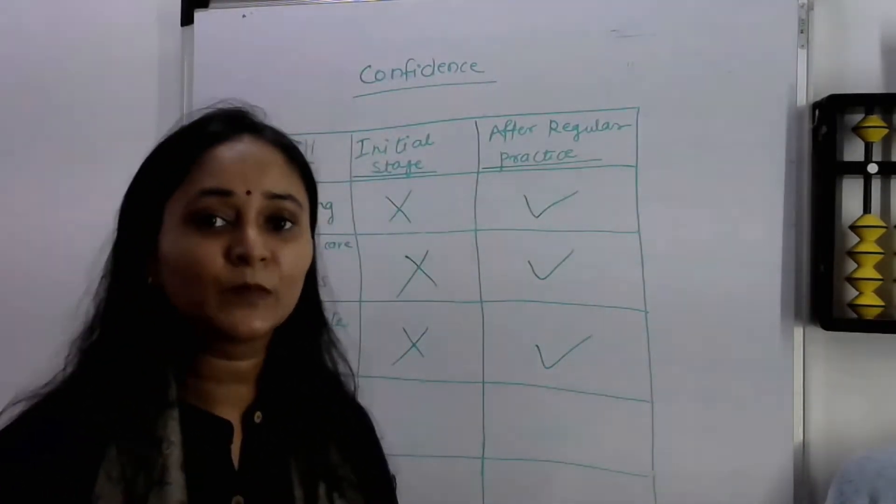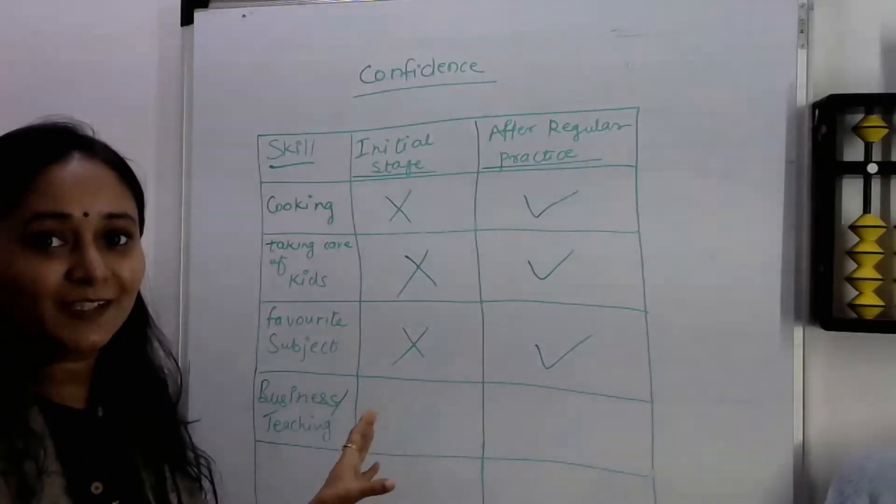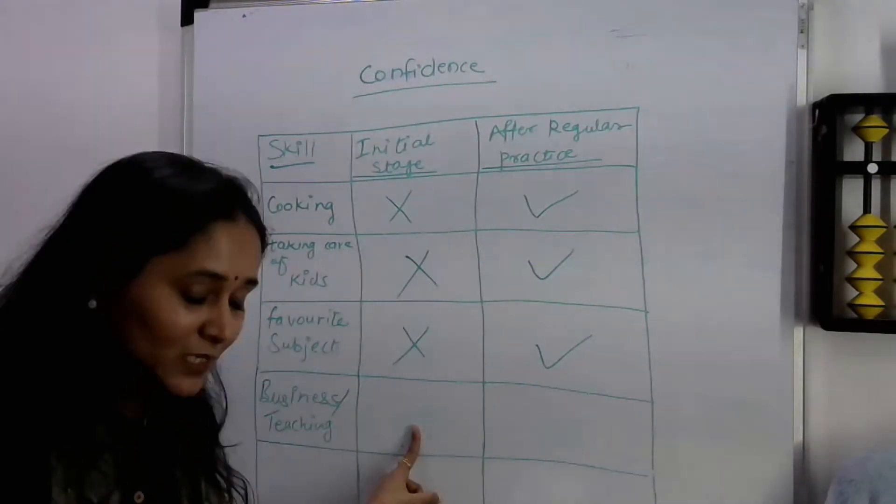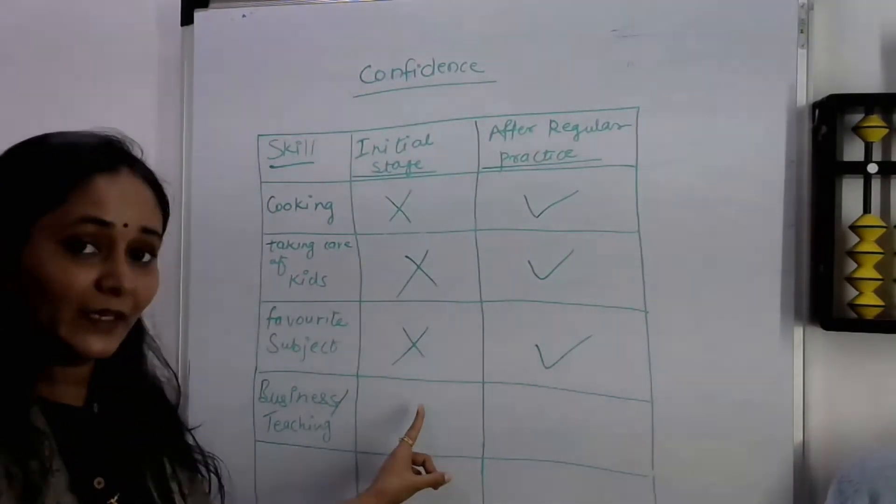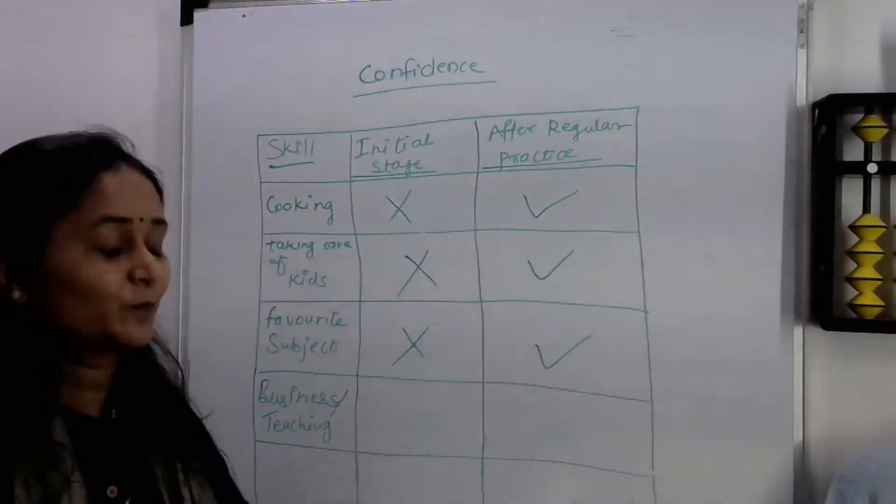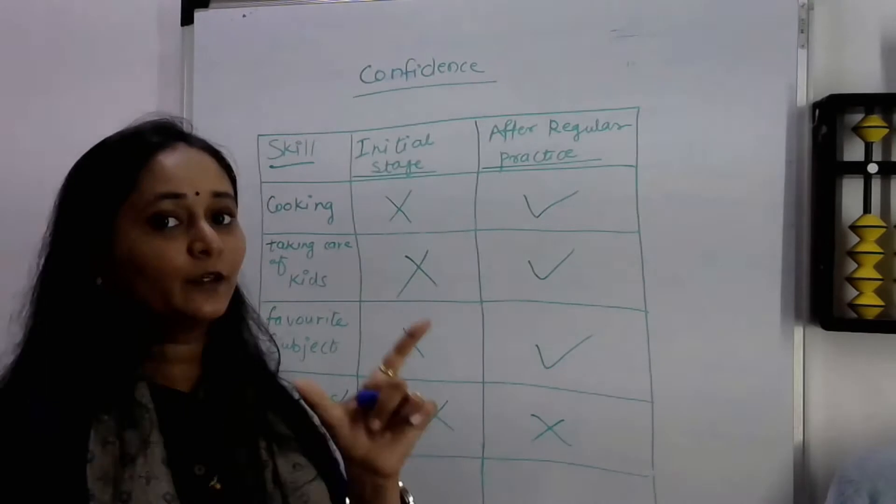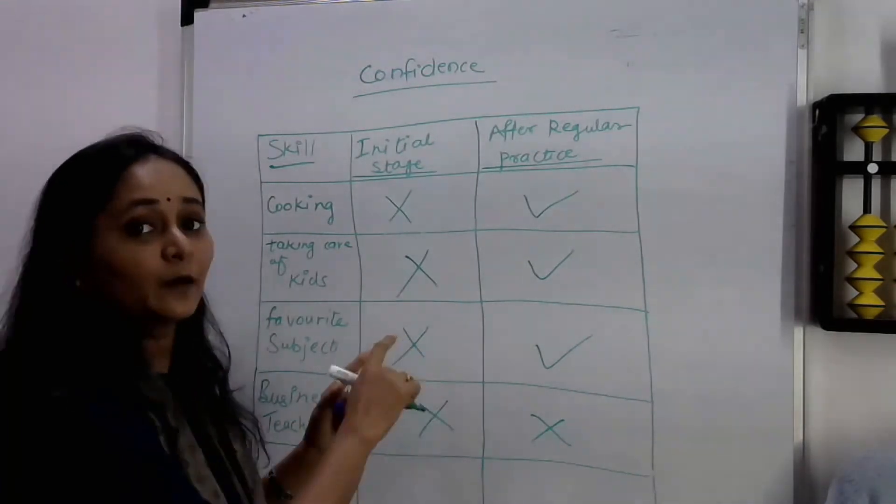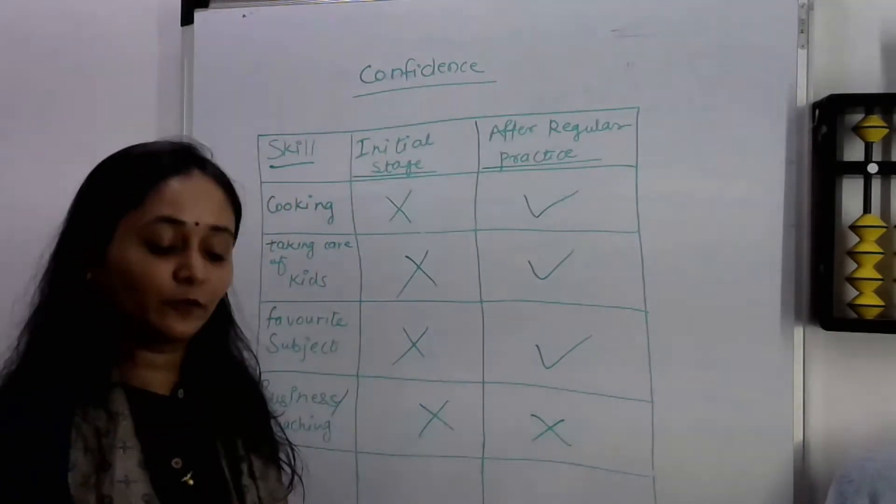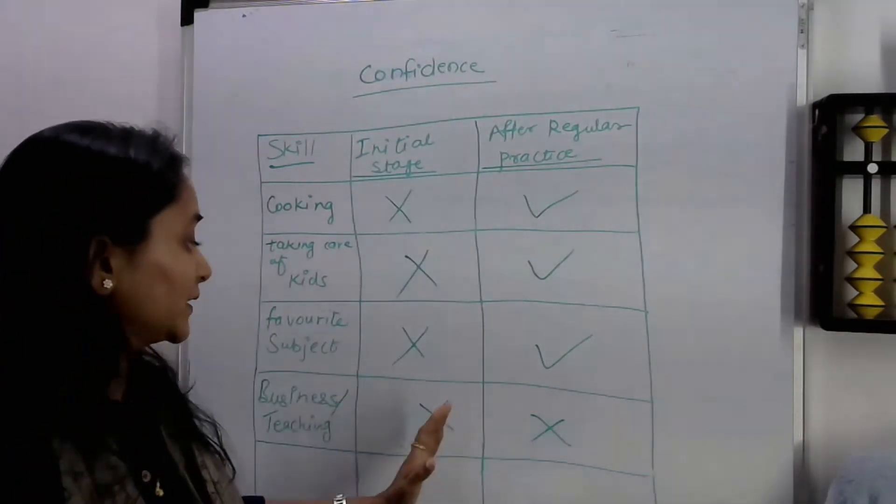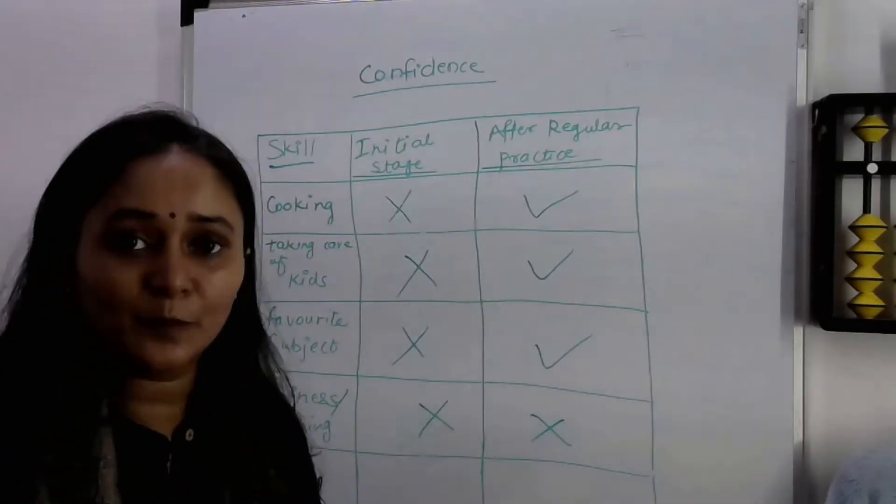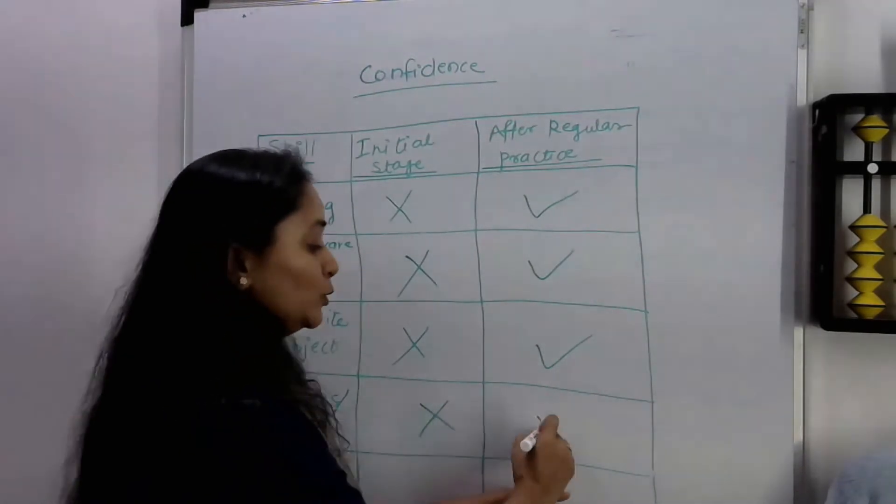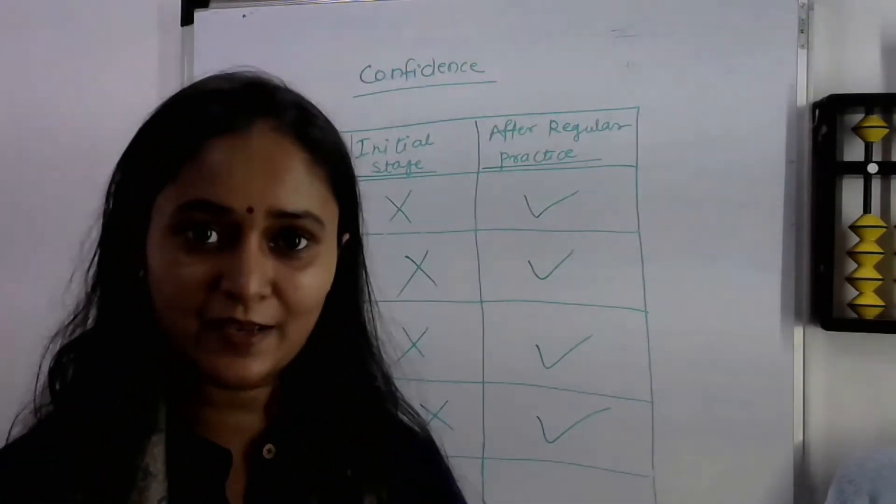Similarly, you can think about this coaching business or teaching. Now you say I'm not confident enough because you have not started this. You are in your initial state and you are not doing it regularly, so you are not confident enough. And that becomes a cycle: because you are not confident enough, you have not started, and because you have not started doing this, you are not confident enough. If you learn this skill properly in a systematic manner, slowly and gradually, after regular practice, you can build that confidence.